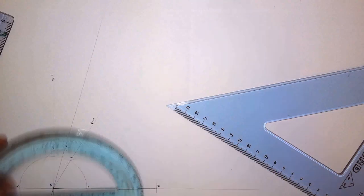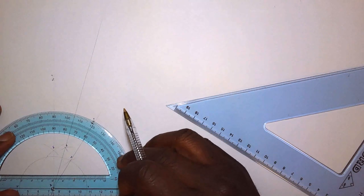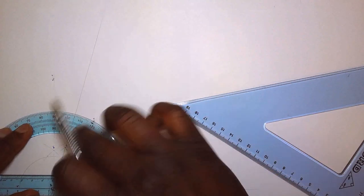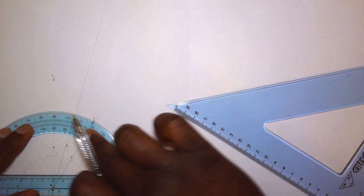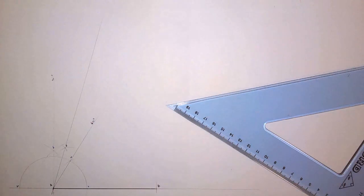So we can double check with our protractor and as you can see this measures exactly 75. Alright. So we've done one half.